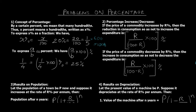Point two gives a formula for percentage increase and decrease. If the price of a commodity increases by r percent, then the reduction in consumption so as not to increase the expenditure is r/(100+r) × 100 percent. Similarly, if the price decreases by r percent, the increase in consumption so as not to decrease the expenditure is r/(100−r) × 100 percent. To understand this properly, let's take an example.